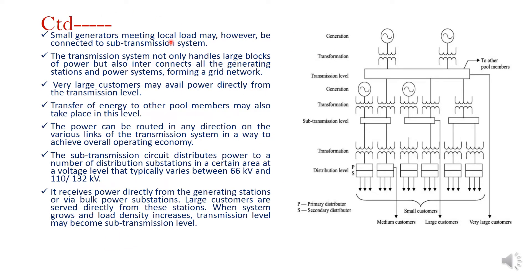Small generators meeting local load may be connected to the sub-transmission system in order to meet local load needs. The transmission system may not only handle large blocks of power but also interconnects all the generating stations and power systems, forming a grid network. Very large consumers may avail power directly from the transmission level or primary transmission. Transfer of energy to other pool members may also take place in the primary transmission. The power can be routed in any direction on the various links of the transmission system to achieve overall economy.